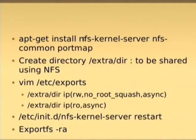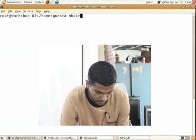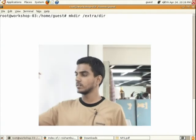Next, we have to create a file on the server that will be shared using NFS with the client. We need to create a directory and in that directory create one file. As shown in the slide, we will create a directory called /extra/dir. Write 'mkdir /extra/dir'. Note: only the person running the server should do this — there is a client-server pair, so one should install the client and one should install the server.